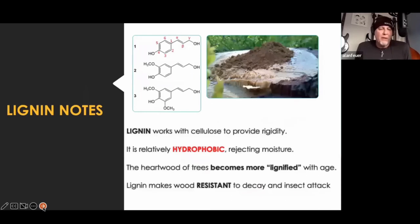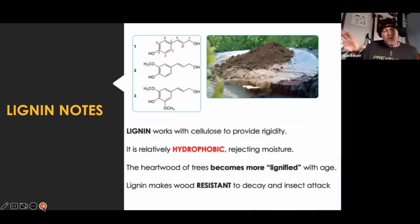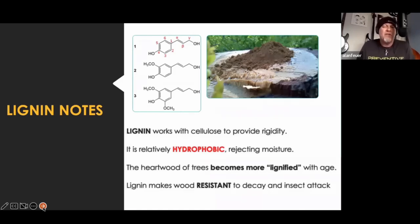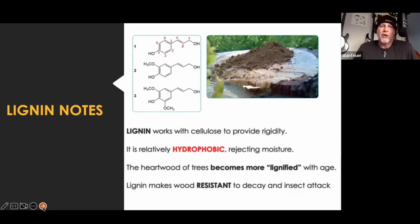Lignin is a binding polymer. It binds up with cellulose to provide rigidity. And by the way it's set up molecularly, it's relatively hydrophobic, which means it pushes away water — it rejects moisture. So as the tree gets older, it becomes more lignified. Old growth forest had a lot more lignified wood, a lot more lignin, and therefore a lot more resiliency from the attack of decay fungi and insects. Unfortunately over the last 60 years or so, we've been using a lot of younger growth forest — forests we've cultivated agriculturally to give us lumber. So we have a lot of high-sugar, high-cellulose lumber, and all of these organisms just love it.